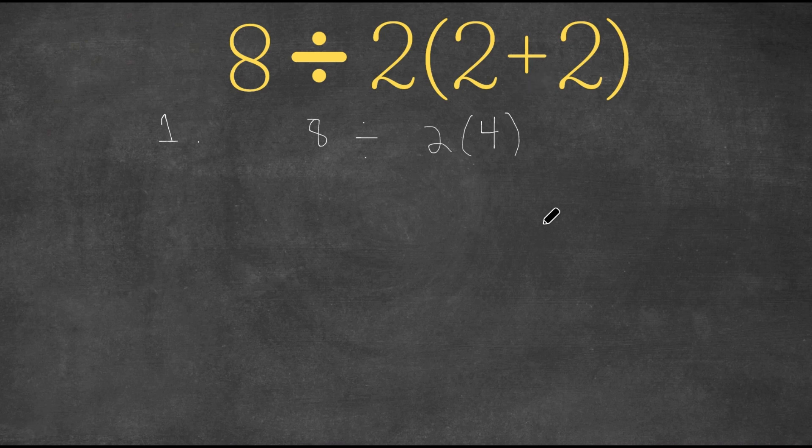However, what people disagreed on was the next step. Some people said that you should multiply the 4 and the 2 first. So that would bring us 4 times 2 is 8. So then we would have 8 divided by 8. And this would equal 1.